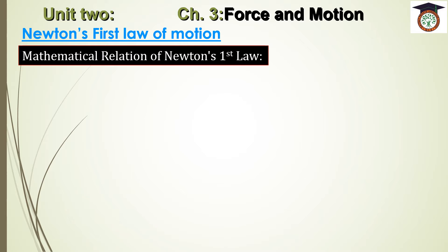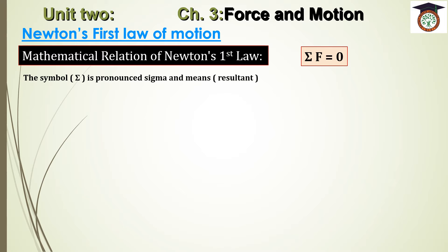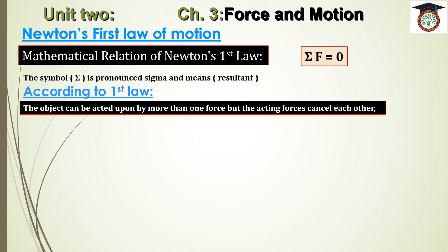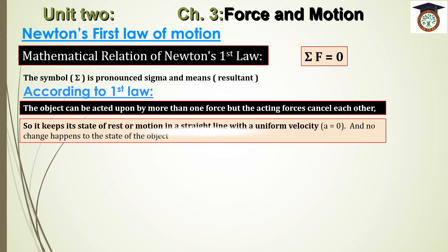The mathematical formula for Newton's First Law of Motion is ΣF = 0, which means the total force affecting an object equals zero. The object can be affected by more than one force, and these forces cancel the effect of each other, so the resultant force equals zero. The Greek letter sigma (Σ) means the resultant or total. Therefore, the object keeps its state of rest or its state of motion with uniform velocity in a straight line, and in this case the acceleration equals zero.